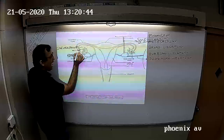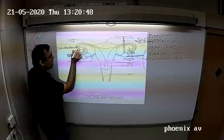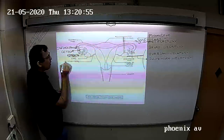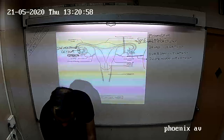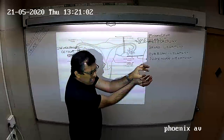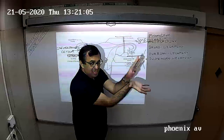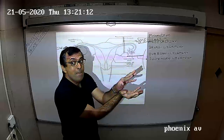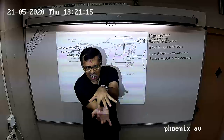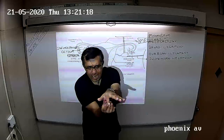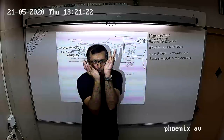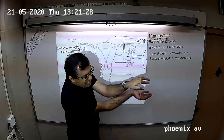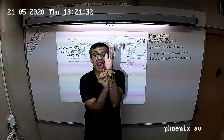The infundibulum has many finger-like processes attached to it called as fimbriae. There is a small opening inside through which the egg will pass, and that opening is called as the ostium. The fimbriae suck the egg released from the ovary into the ostium of the infundibulum.